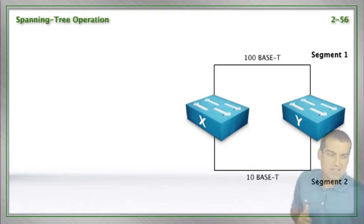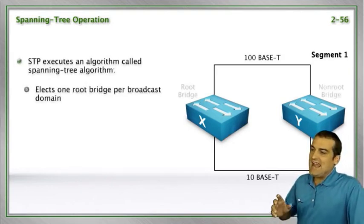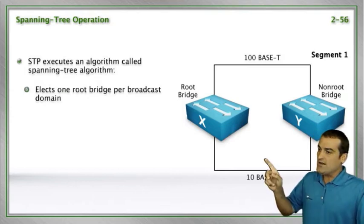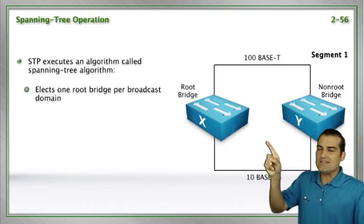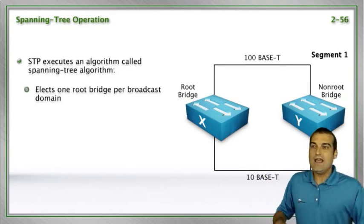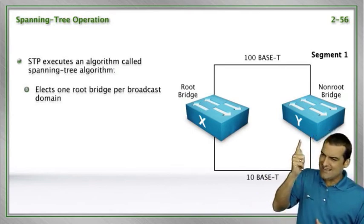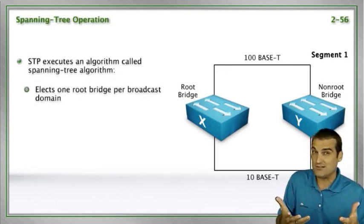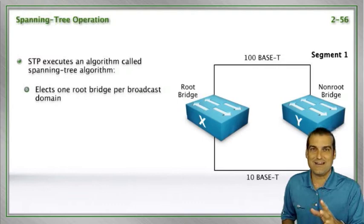All right. Step one of this process, there is a king of the hill that is elected. One of your switches is going to be elected what we call the root, the king of the hill. And then your other switches, notice we like to call them bridges in spanning tree terminology.